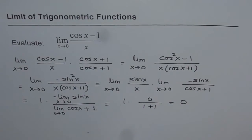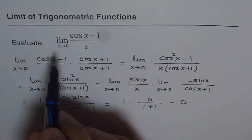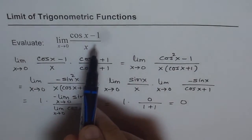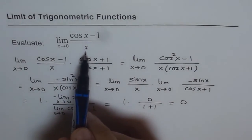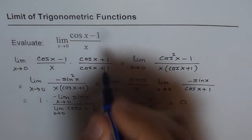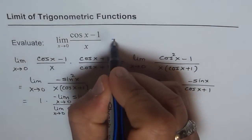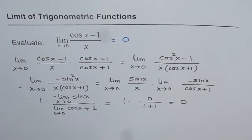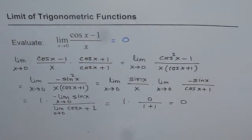So our answer is 0. The limit of cos x minus 1 over x when x approaches 0 is equal to 0. Now let's review how we solved this.